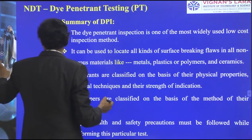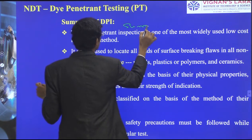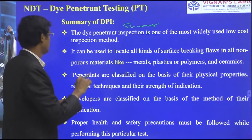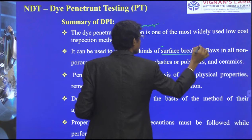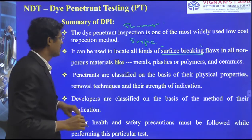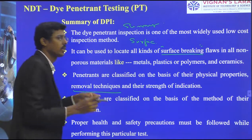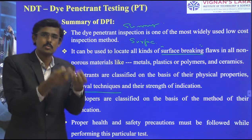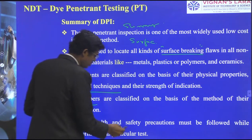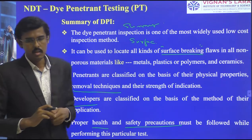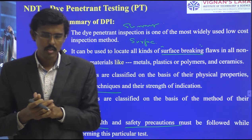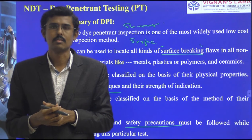In summary: we have seen di-penetrant inspection as the most widely used NDT method. It detects only surface-breaking discontinuities, not subsurface. Penetrants are classified based on their physical properties and removal technique — water washable, solvent removable, and post-emulsifiable. Developers are classified similarly. Proper health and safety precautions have also been covered. This completes the chapter on Di-Penetrant Inspection. The remaining subjects will be covered in the next session. Thank you.